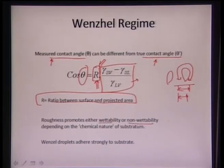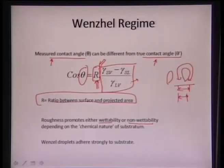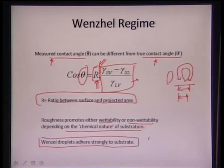It totally depends on what the original surface is. If the original surface is hydrophobic, roughness will induce much more hydrophobicity. If the original surface is hydrophilic — tending to wet — roughness will have a pronounced effect of increasing wetting. This roughness factor depends on the chemical nature of the substrate. The Wenzel droplet adheres stronger to the substrate, whereas the Cassie-Baxter state tends toward non-wetting.